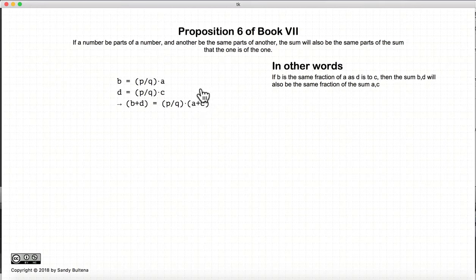Now remember that Euclid makes a distinction between a part, which is a simple fraction, which is one over something else, and parts, which is something like p over q, or two-thirds. So one-third he would call a part, and two-thirds he calls parts.